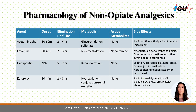Non-opiate analgesics can be used to minimize the need for opioids, thereby mitigating potential adverse effects related to opioids. Acetaminophen should be used as an adjunct to an opioid to decrease pain intensity and opioid consumption. It can be used as an analgesic and antipyretic. Doses should be capped at 4,000 mg per day, and in hepatic impairment, limit doses to 2,000 mg per day.